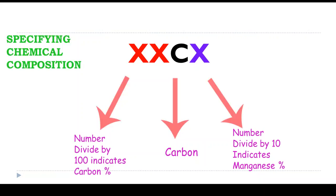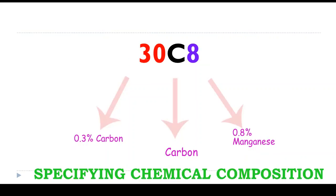Plain carbon steel is designated as XXCX where the first two letters divided by 100 indicates carbon percentage, letter C indicates carbon, and last digit divided by 10 indicates percentage of manganese. Let us take an example: 30C8 means 30 divided by 100 is 0.3% carbon, letter C indicates carbon, and last digit 8 divided by 10 indicates percentage of manganese.